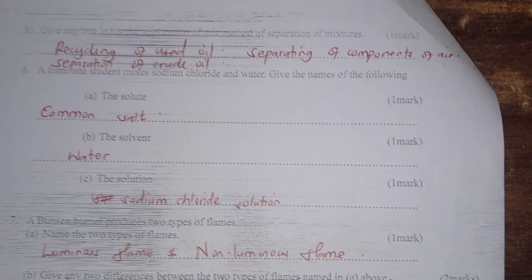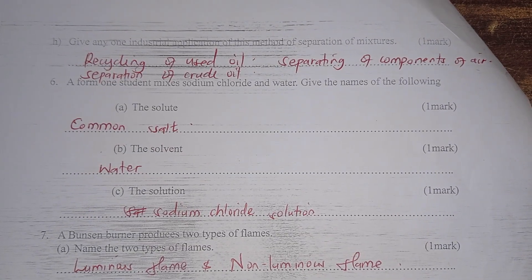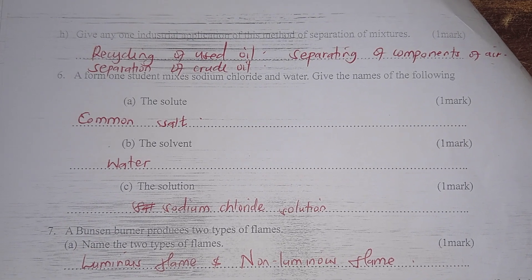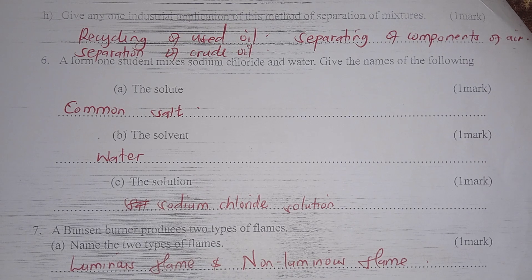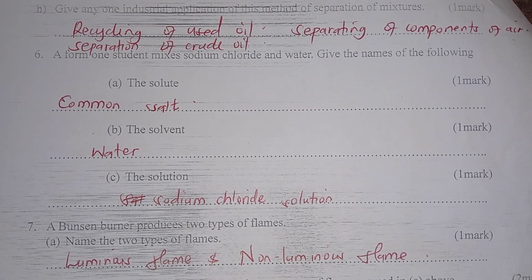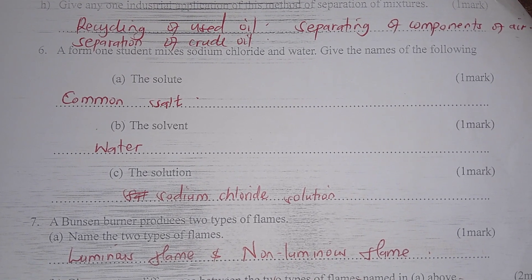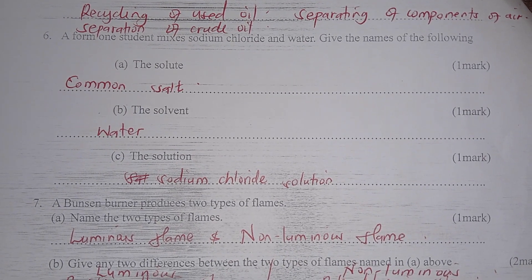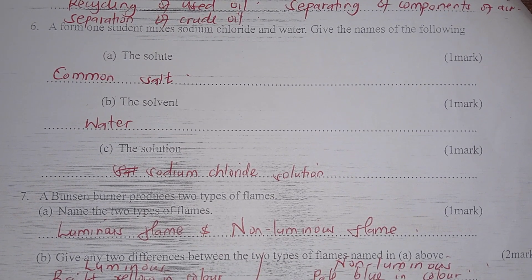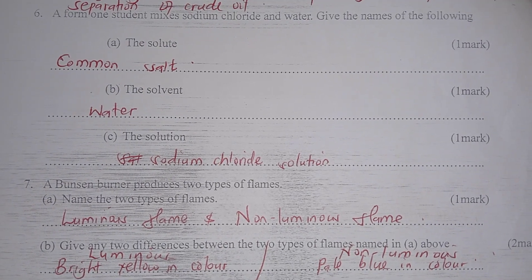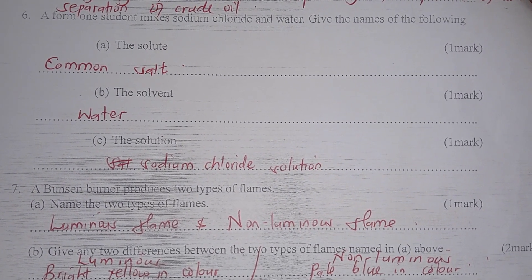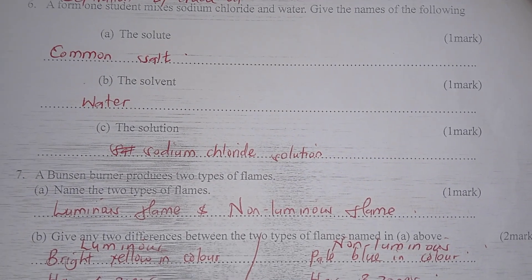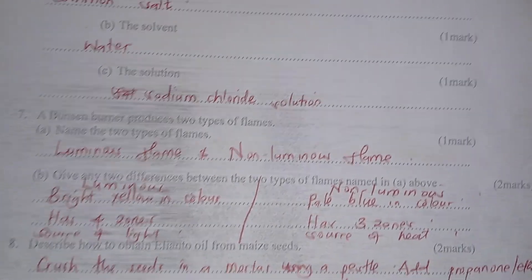Give any industrial application of this method of separation: recycling of oil, separating the components of air — that is, fractional distillation of liquefied air — and separation of crude oil. A student mixes sodium chloride and water. The solute is sodium chloride — a solute is a substance that dissolves in a solvent. The solvent is water, and the solution is sodium chloride solution.